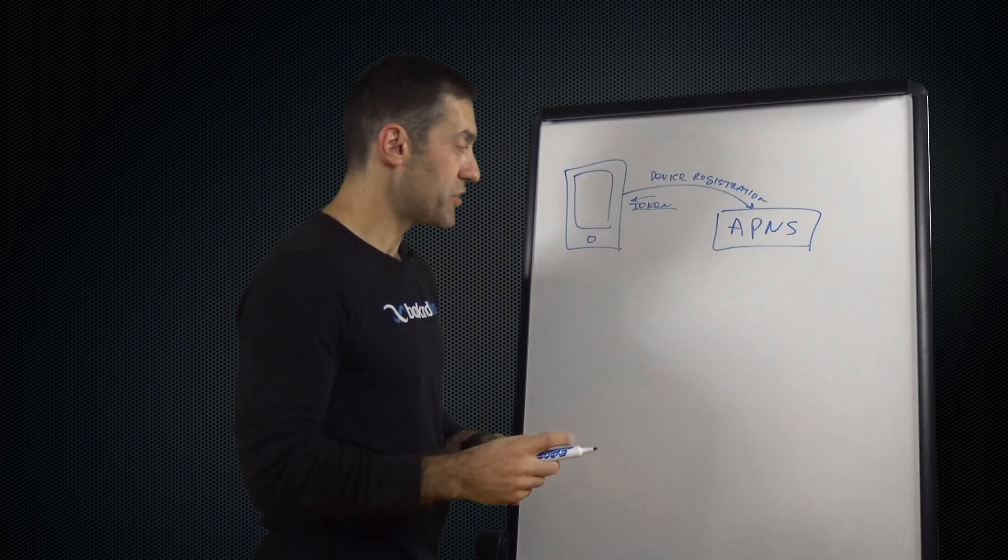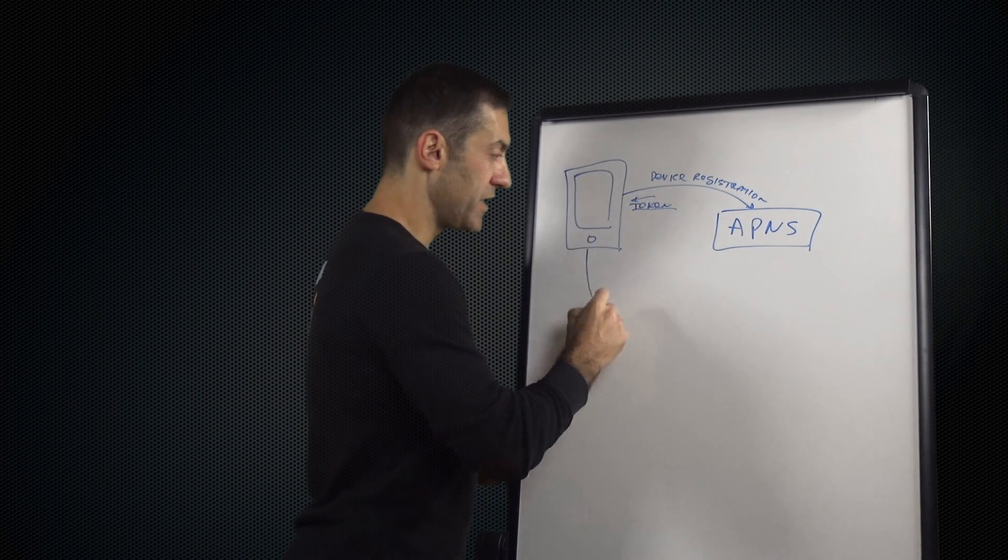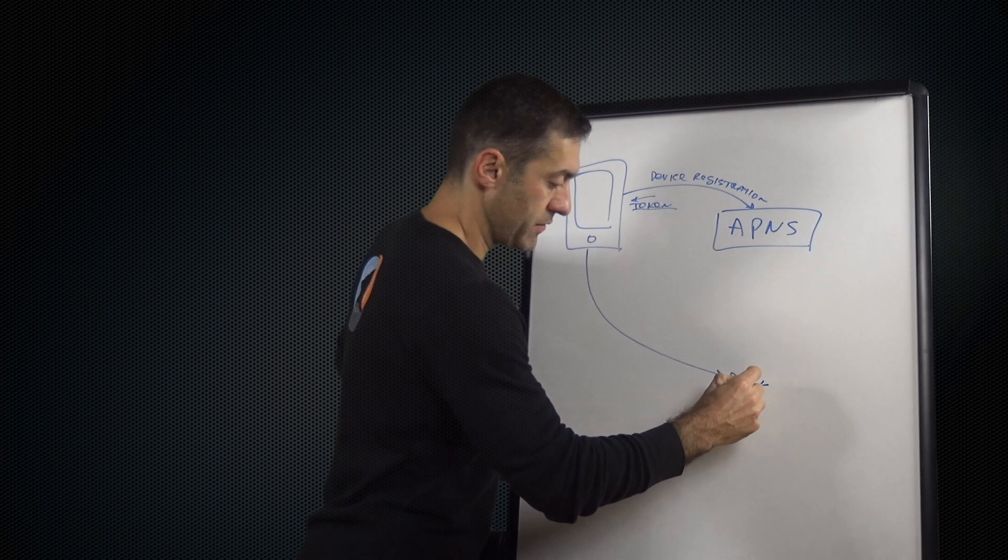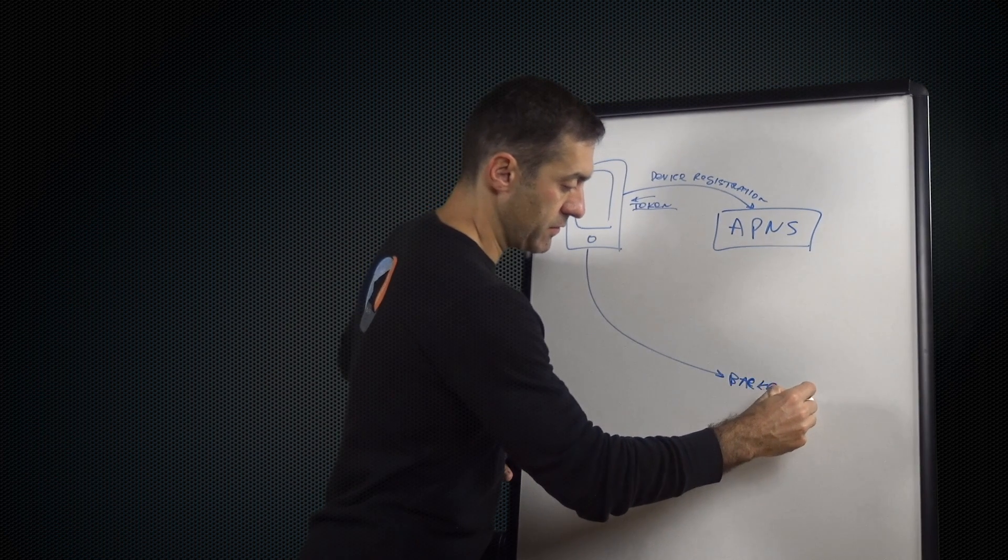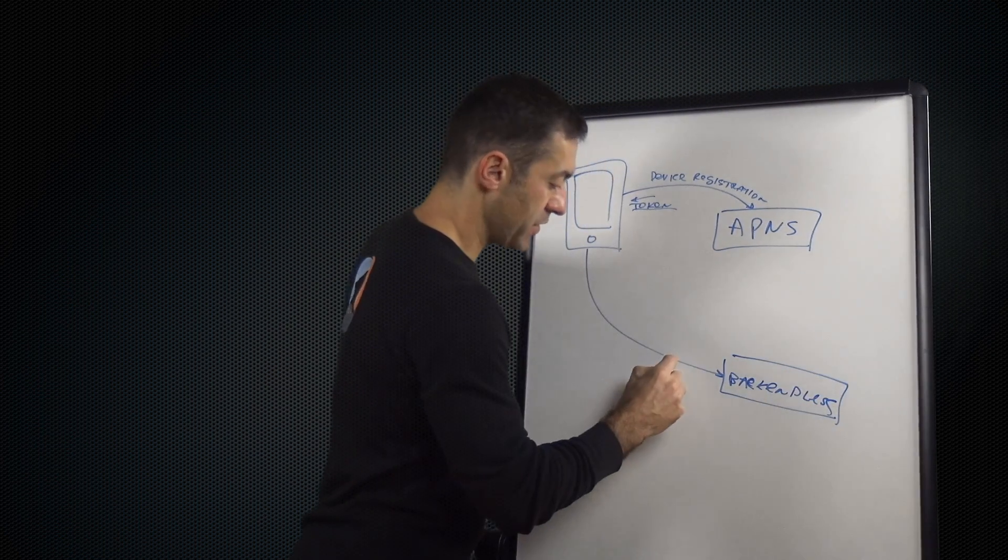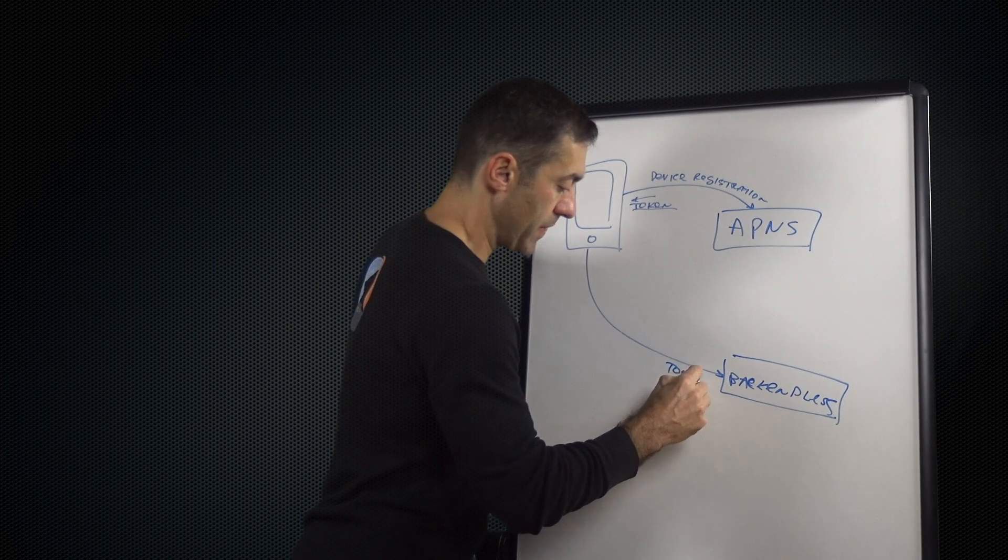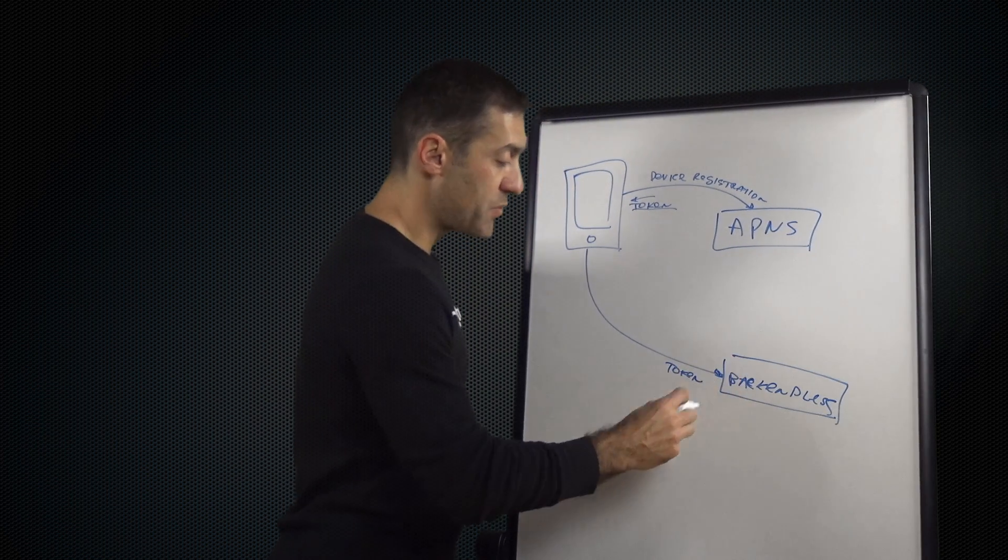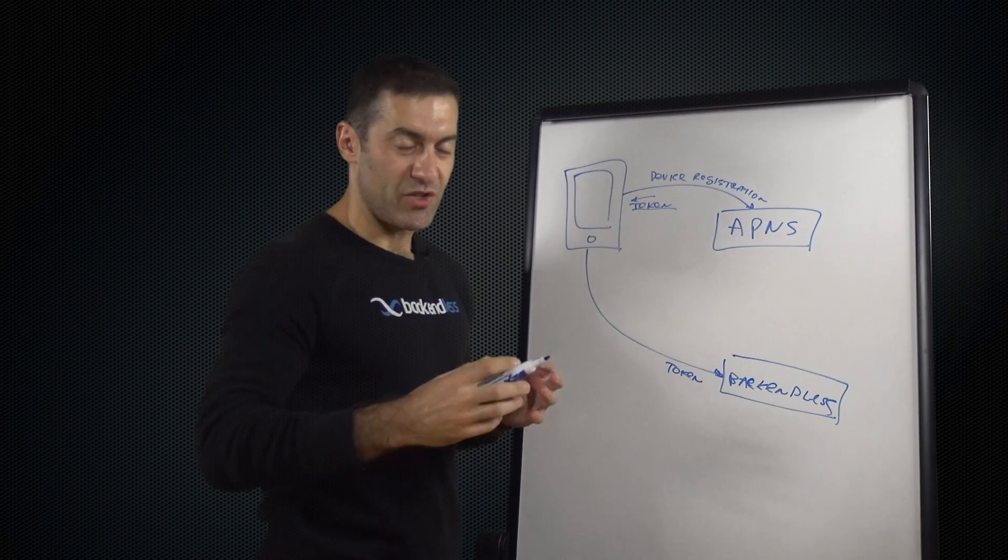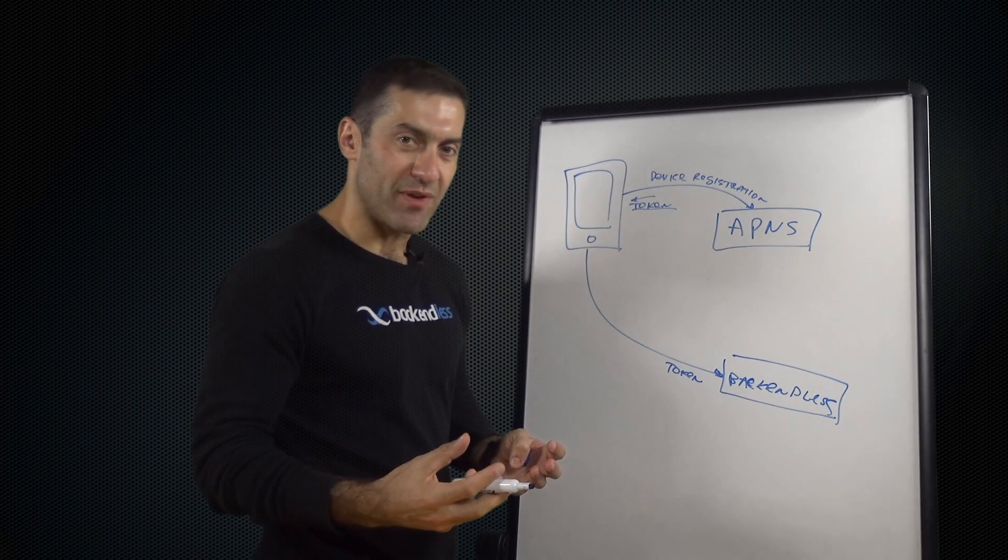Once this device is registered, that token needs to be sent to Backendless. So that token goes to Backendless. At this point, Backendless knows that there is this device with that token that is registered and can start receiving push notifications.